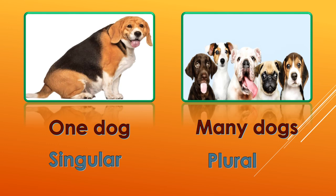Look at the last picture — one dog. That is singular. Singular means one, so one dog is singular. Many dogs — plural. Because plural means more than one. One dog — singular, many dogs — plural. Singular means only one and plural means many, more than one. This is this much for today. We shall meet in the next class. Till then, bye bye.